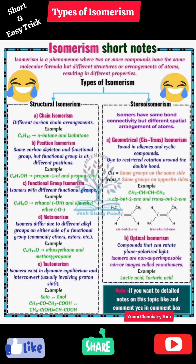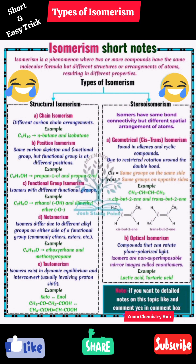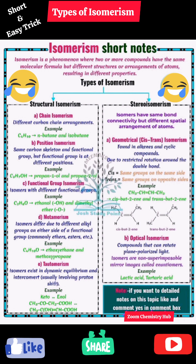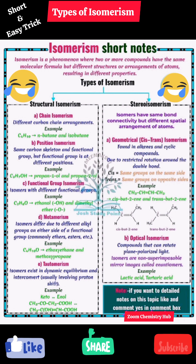Geometrical isomerism arises due to restricted rotation around the double bond. In cis isomers, the same groups are on the same side, while in trans isomers, the same groups are on opposite sides.